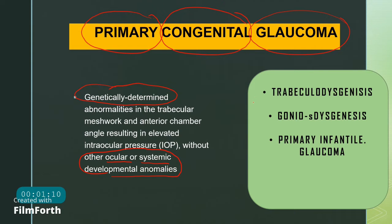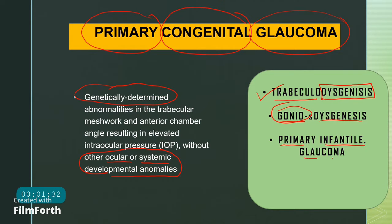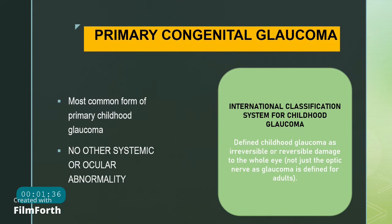There are many names for primary congenital glaucoma. It was called trabecular dysgenesis, meaning maldevelopment of the trabecular meshwork, or goniodysgenesis — where 'gonio' means the angle. It is also called primary infantile glaucoma. However, the term now commonly used and adapted by the international classification system for childhood glaucoma is primary congenital glaucoma.